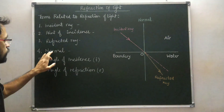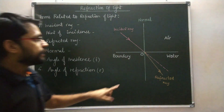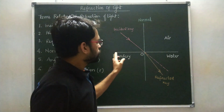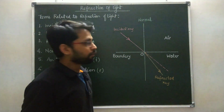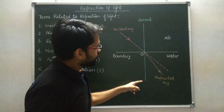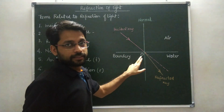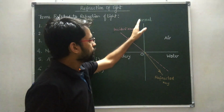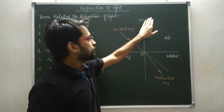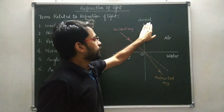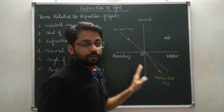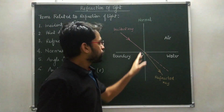The fourth term is normal. Normal is the line which is perpendicular to the boundary. Here, this green line is the normal at the point of incidence. Always draw the normal at the point of incidence. Normal is a very important line because this is a reference line, and all the angles are measured from this line.